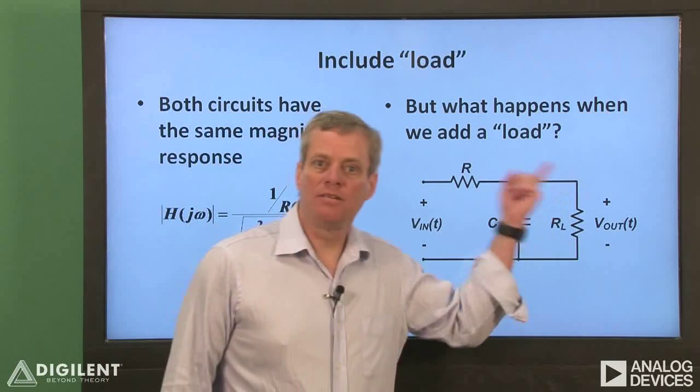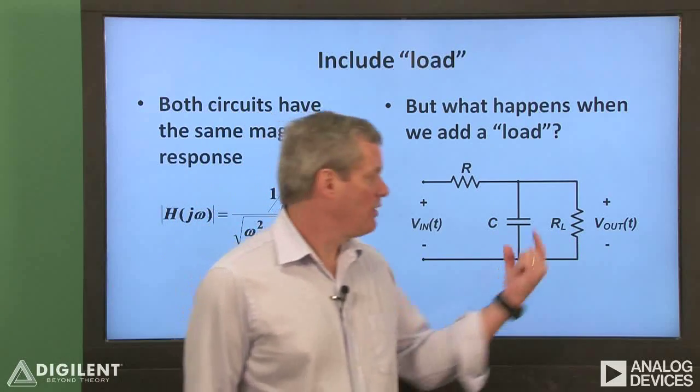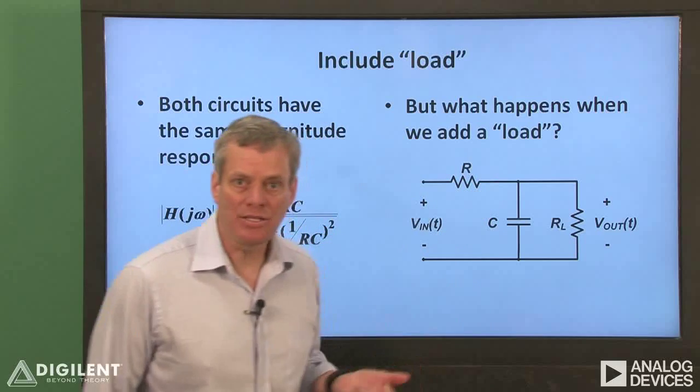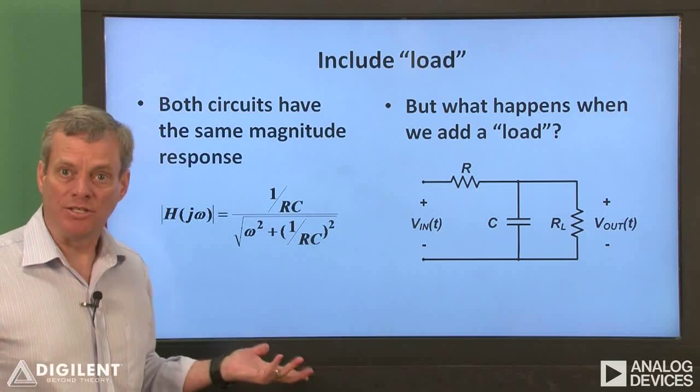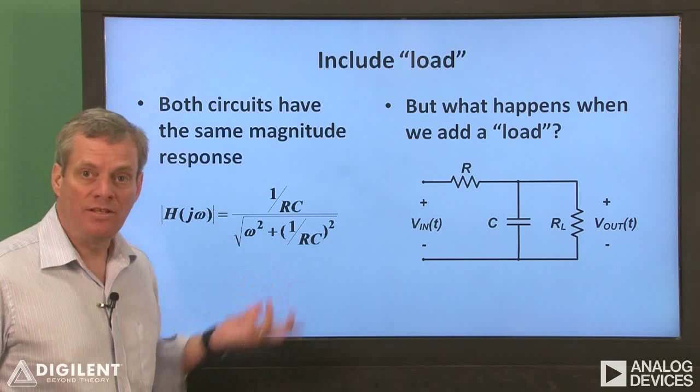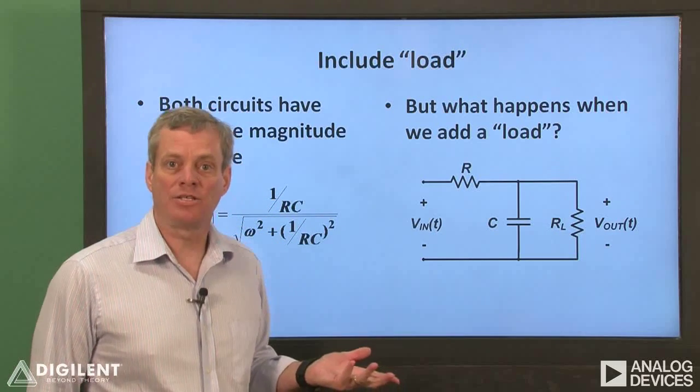In the case of our passive filter, it's easy to see that the equivalent resistance seen by the capacitor changes. Therefore, the cutoff frequency of the circuit changes. The r terms in this equation are equivalent resistances seen by the capacitor.